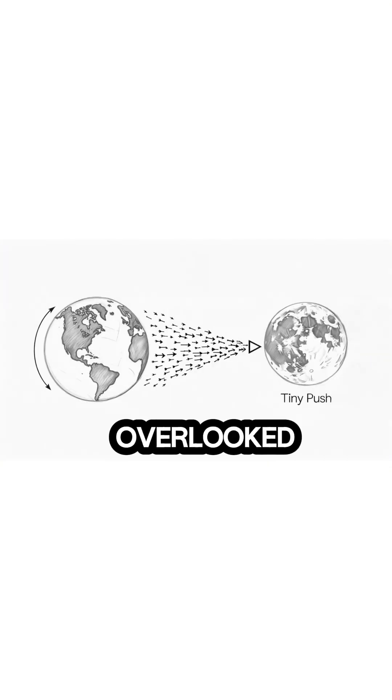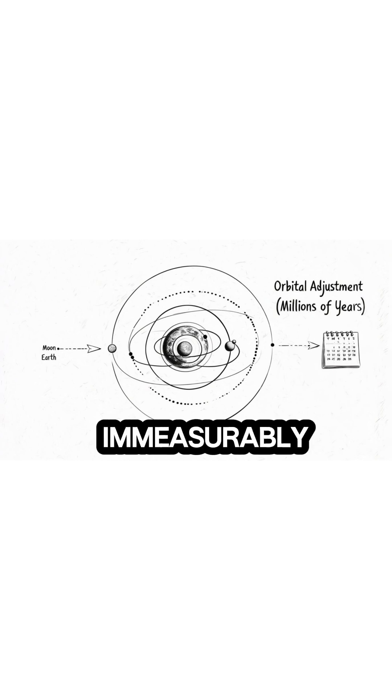Another often overlooked benefit is in the realm of orbital mechanics. The photons from our lasers would exert a tiny amount of radiation pressure on the lunar surface. While the force would be immeasurably small, the act of consistently applying it from the Earth could, over millions of years, theoretically influence the moon's orbit in a calculable way.